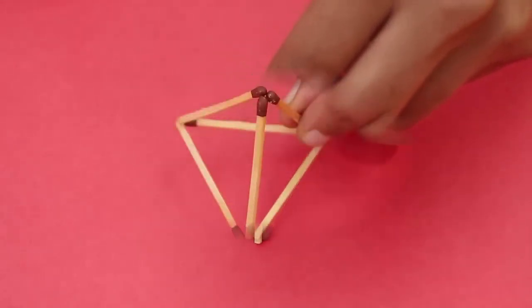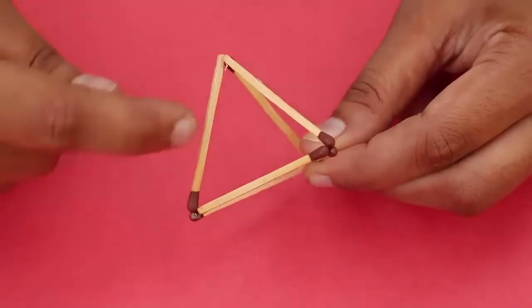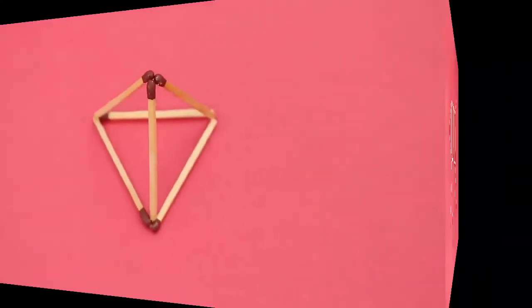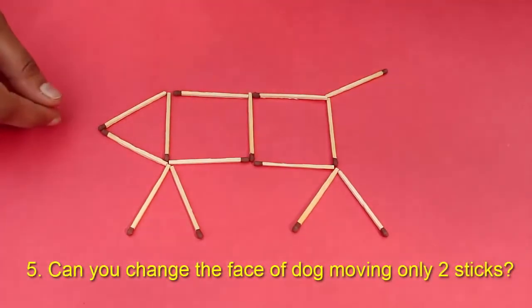Hold the three matchsticks on top and place them on the three vertices of the equilateral triangle to make a tetrahedron with four triangles.